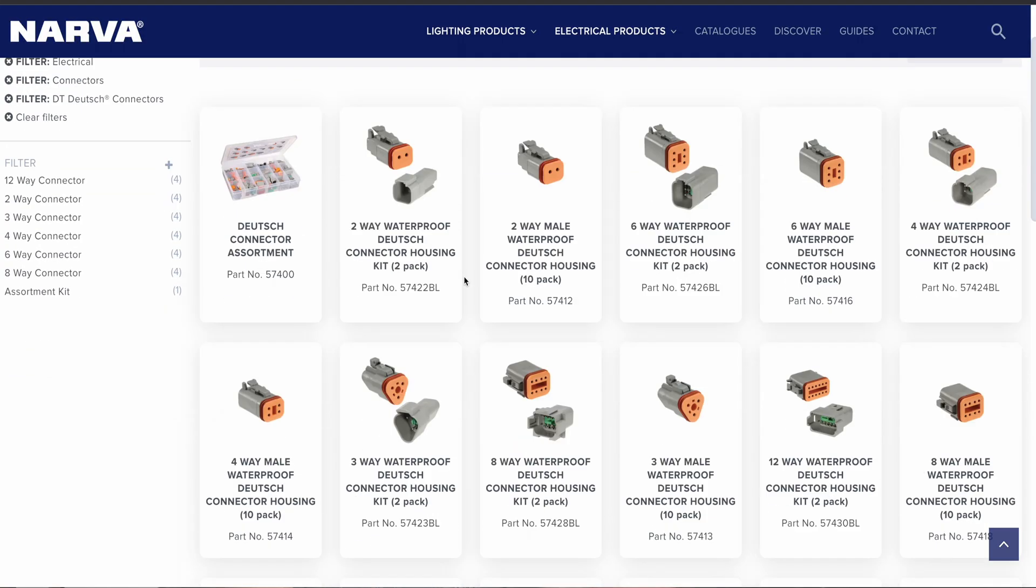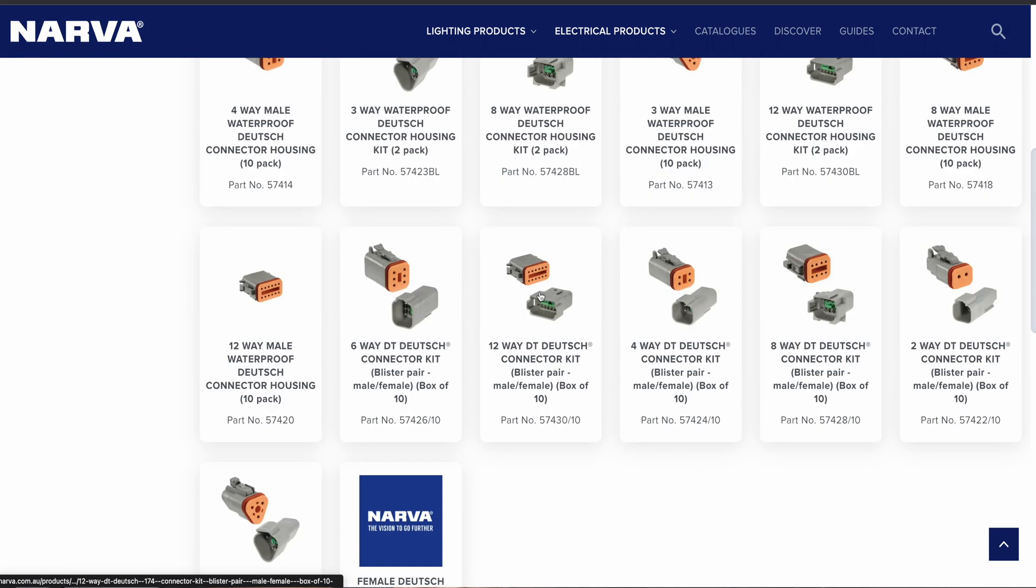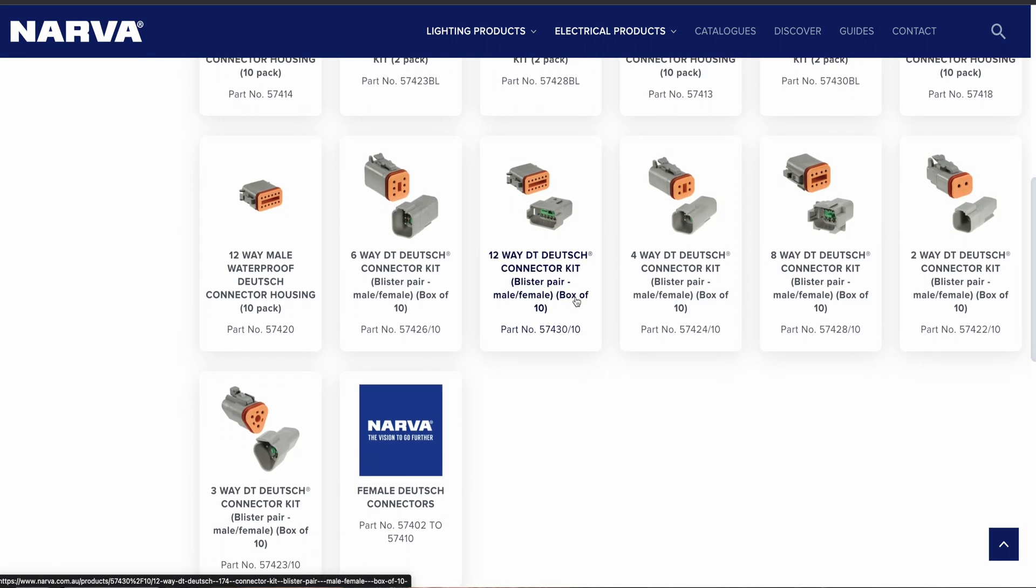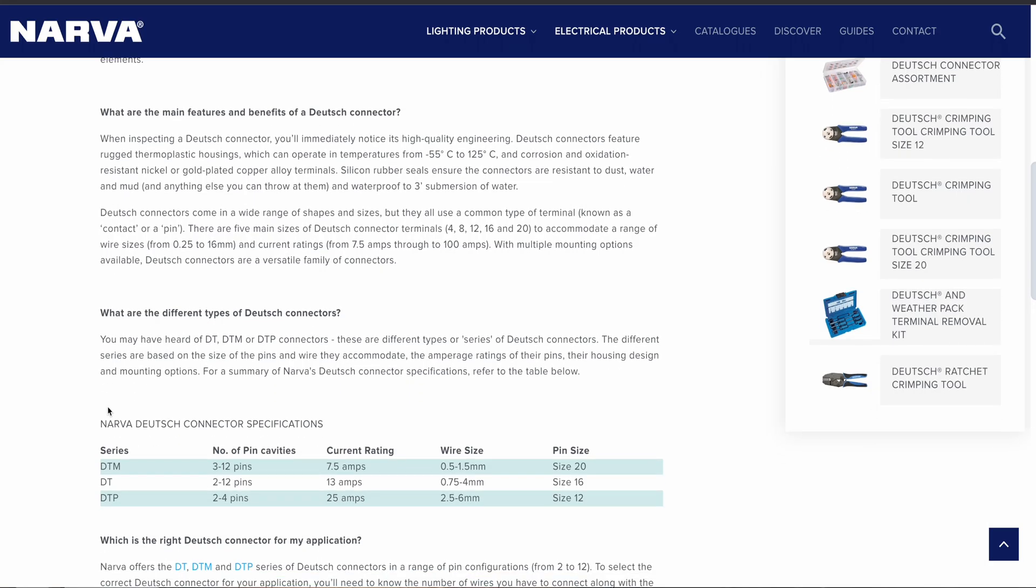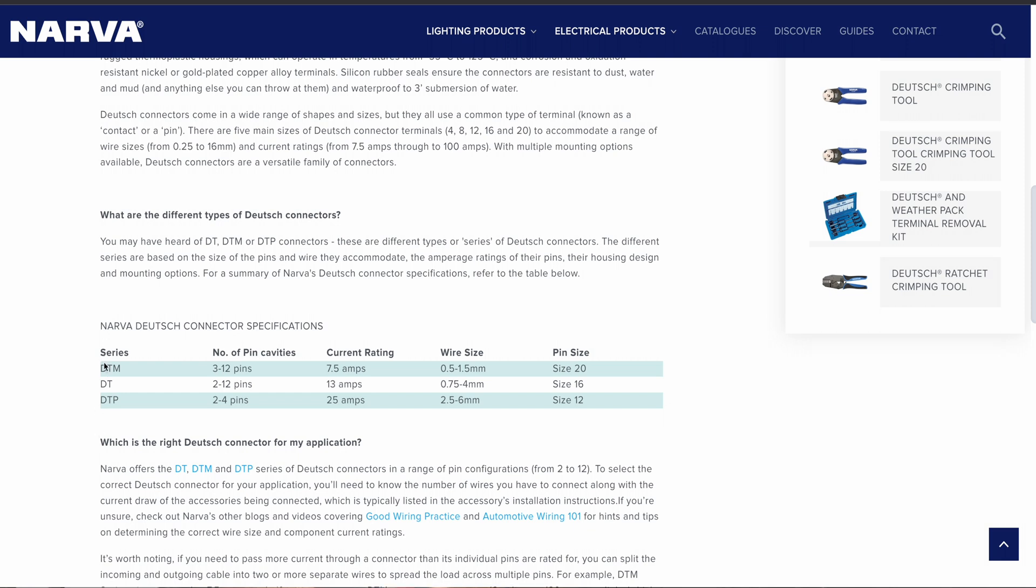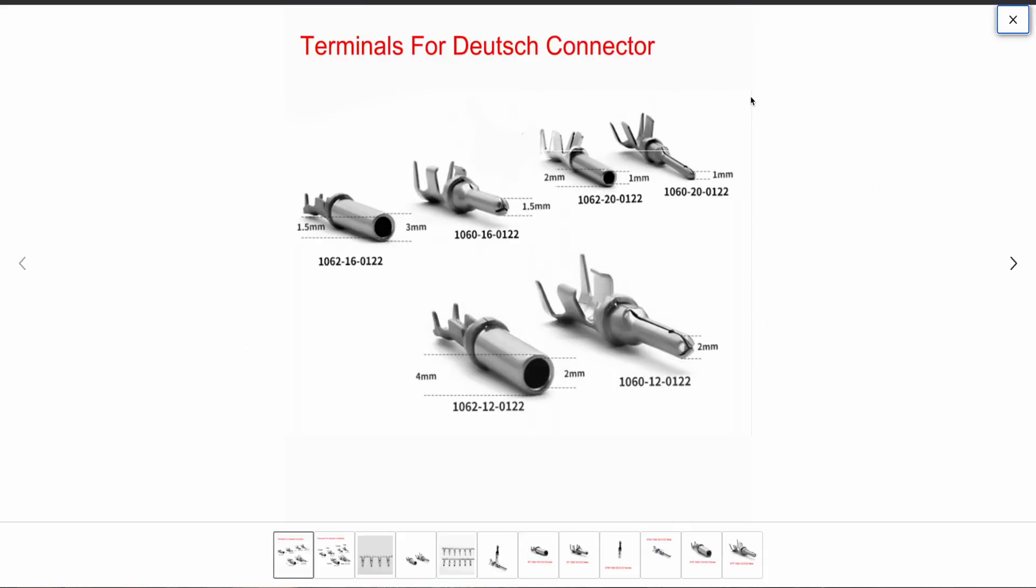Deutsch connectors are IP67 connectors that you'll see in the automotive industry. That means they are submersible up to about one meter for 30 minutes. So they are dust tight and mostly water tight. For most situations you'll find yourself in, they are water tight. You can get them in two pin, four pin, six pin. There are different sizes, DTM, DT, DTP, and these sizes obviously take different cable sizes. They can handle anywhere up to 100 amps on the high end and 16 mil squared cable on the high end, down to 0.25 mil squared cable for these smaller connections.